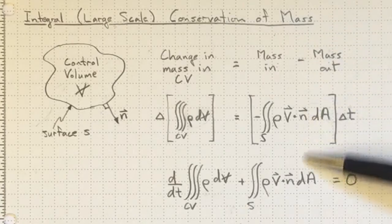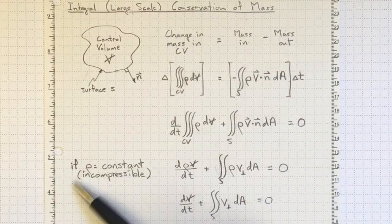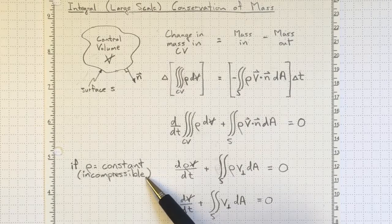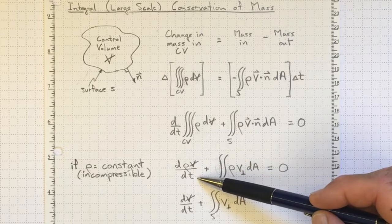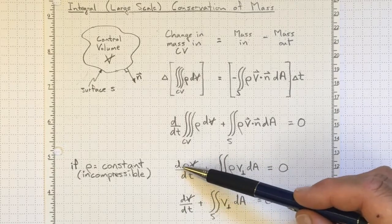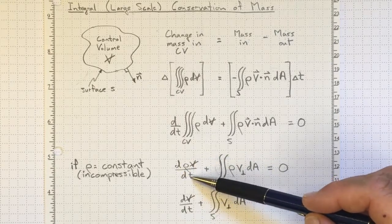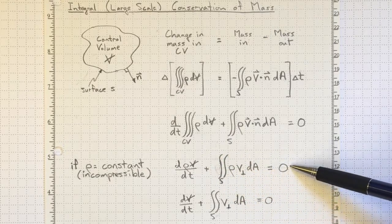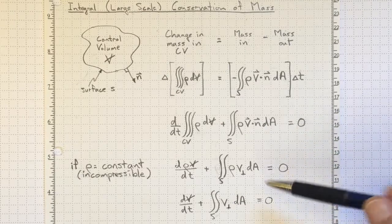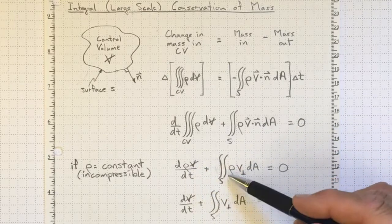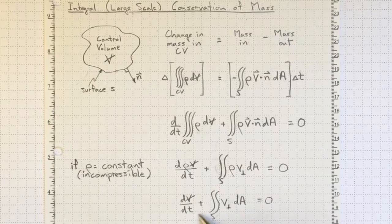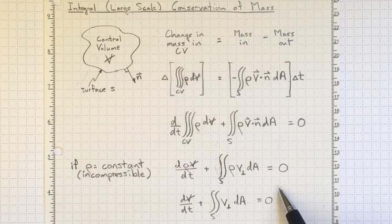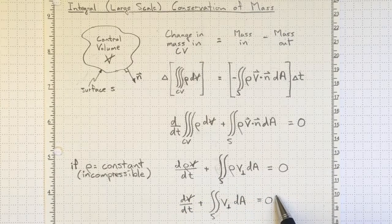Now, we can make this simpler. If the density is constant, i.e. usually if the flow is incompressible, then for a fixed control volume, we can have d rho v dt plus the integral over the surface, rho v perpendicular dA equal to zero. And the densities will cancel out. So we wind up with just a volumetric conservation equation, because conserving volume and conserving mass wind up meaning the same thing.